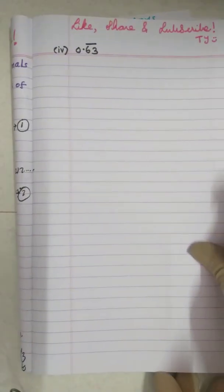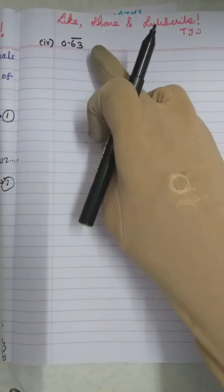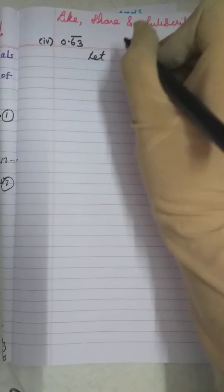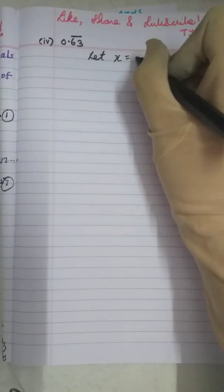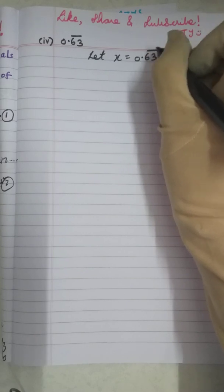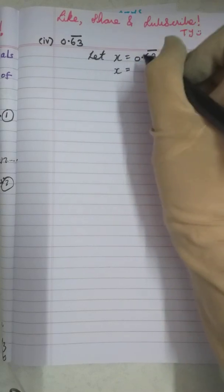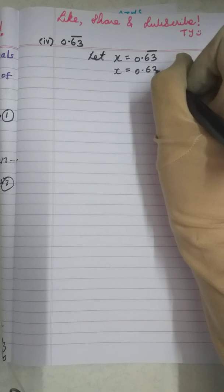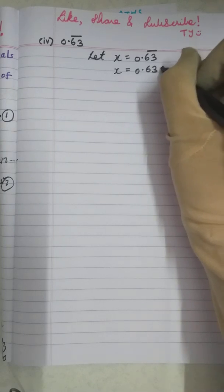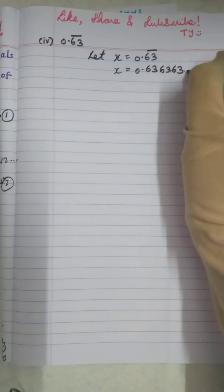Now, first, the usual procedure that whenever a decimal form which is non-terminating repeating is given, we have to assume this as X. So let X equals 0.63̄. Now 0.63̄ means that 63 is repeating. So it can be written as 0.636363 and so on.